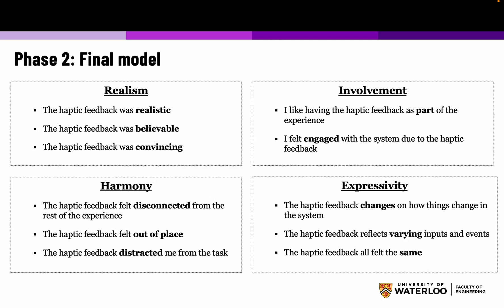Realism and expressivity were very similar to the originally proposed haptic experience model, with loadings that overlapped considerably with what we found with vibrotactile feedback. Harmony emerged again, but notably it was all reverse-coded or negative statements — the haptic feedback felt disconnected from the rest of the experience, it was out of place, it was distracting. So harmony isn't measured directly; rather, we can measure a break of harmony. Finally, we did not see immersion or autotelics, but we did see involvement — 'I like having haptic feedback as part of the experience' and 'I felt engaged with the system due to the haptic feedback' — which overlaps prior models where involvement is a sense of meaningful connection or attention focused on the subject of interest.